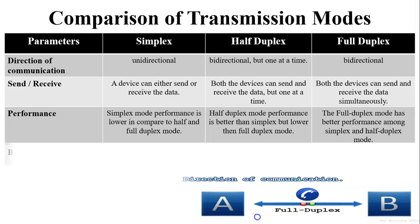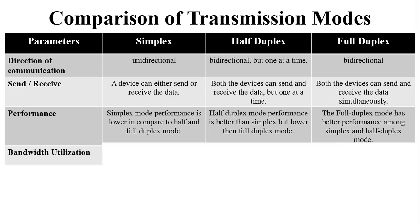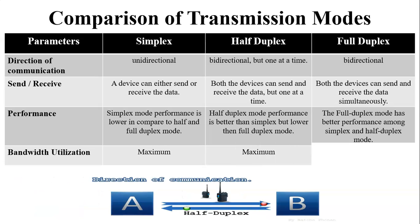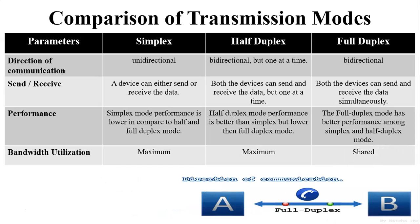The next parameter is bandwidth utilization. In simplex mode, only A is the sender, so maximum bandwidth is utilized by user A — B cannot send data to A. In half duplex mode, at a time only one sender is there, so the sender accesses all the bandwidth — maximum bandwidth utilization of the channel. In full duplex mode, both are senders and receivers at the same time, so bandwidth is shared between both users.